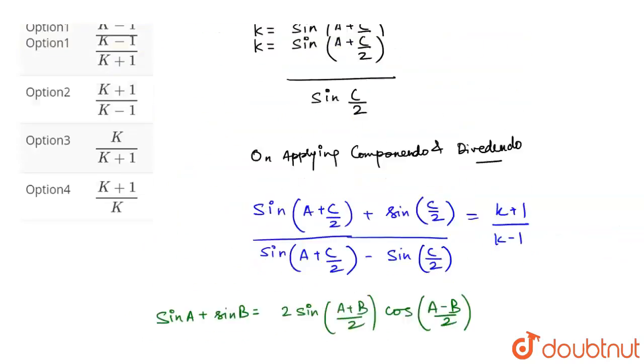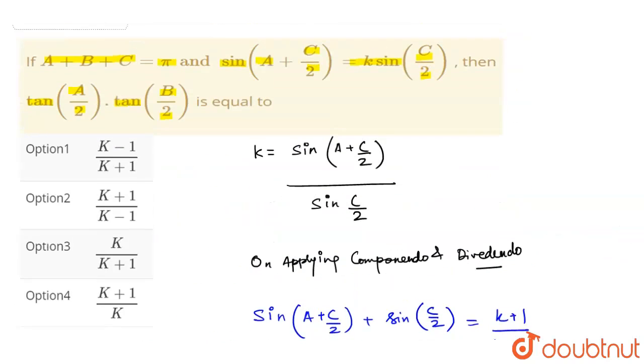Let me check which option is the most suitable one. It is option number 1, which is (k-1)/(k+1). I hope you understood the explanation. Thank you.